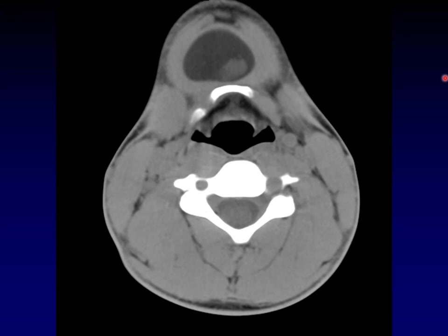Thyroglossal duct cysts don't have fat in them, but dermoid tumors do, and they often have a small plug of tissue in the center of the dermoid cyst. Notice that the wall is a little more pronounced in a dermoid than it is in, say, a branchial cleft cyst or a lymphatic malformation.